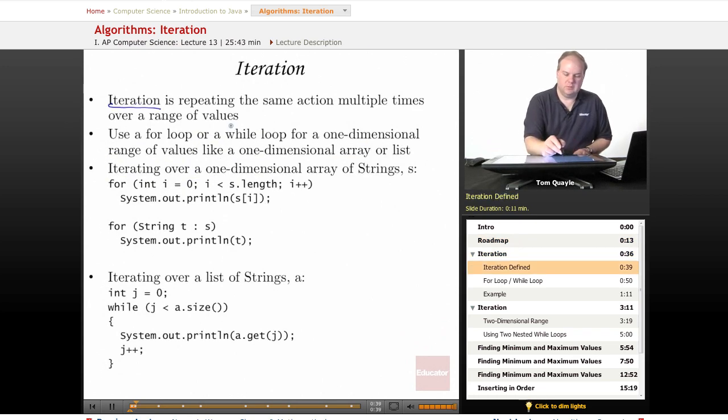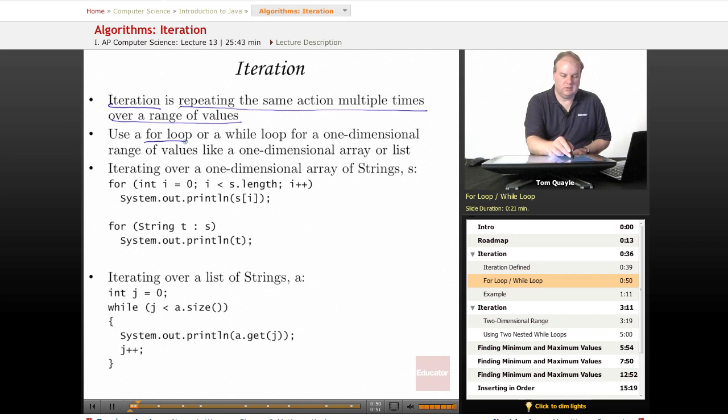Iteration simply means repeating the same action multiple times over a range of values. The most common method of iteration is using either a for loop or a while loop. If you have a one-dimensional range of values, like a one-dimensional array or list, you can simply use a for loop or a while loop to perform the same action for each value in the set.